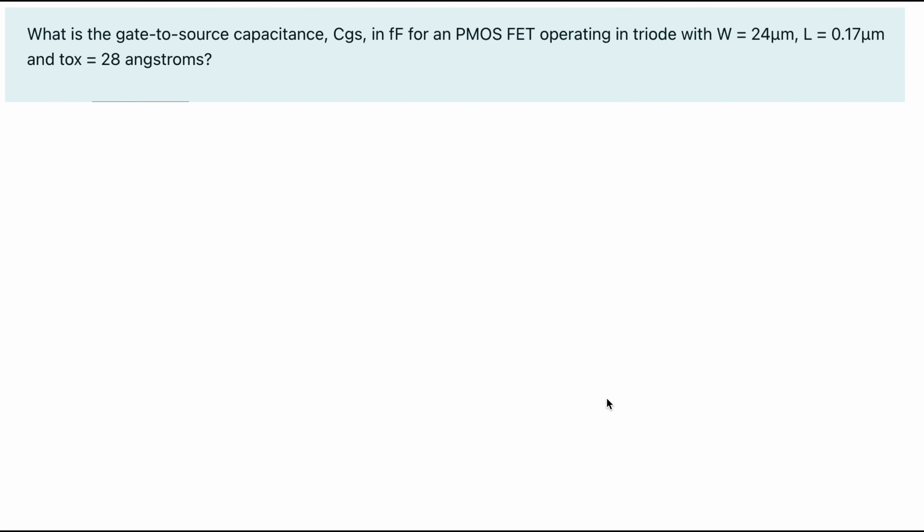Gate to source capacitance, CGS, in femtofarads for a PMOSFET operating in triode with W equal to 24 micrometers and L of 0.17 micrometers and TAUX of 28 angstroms.